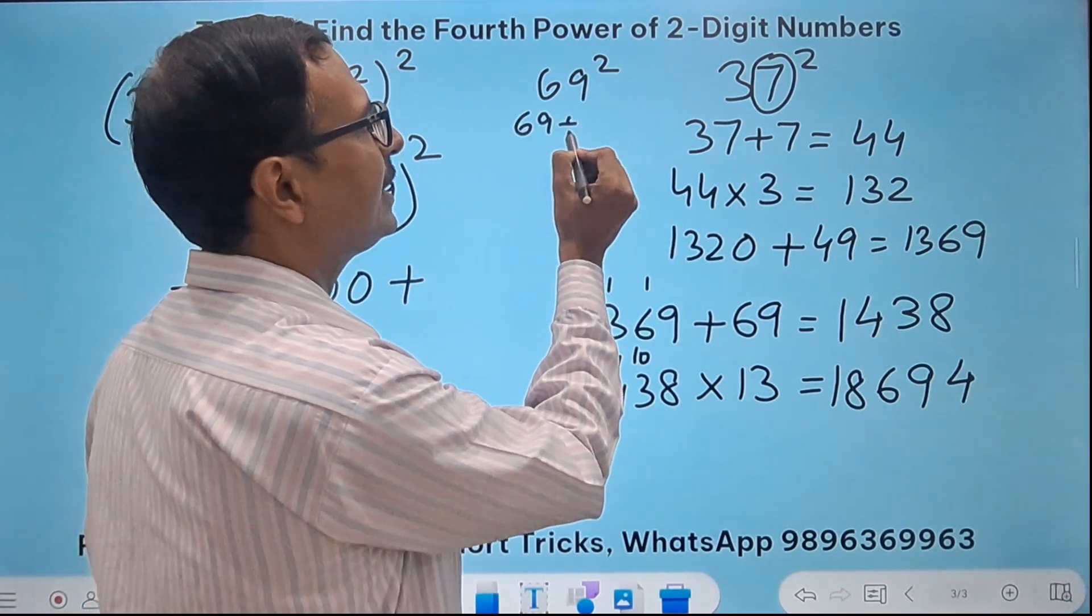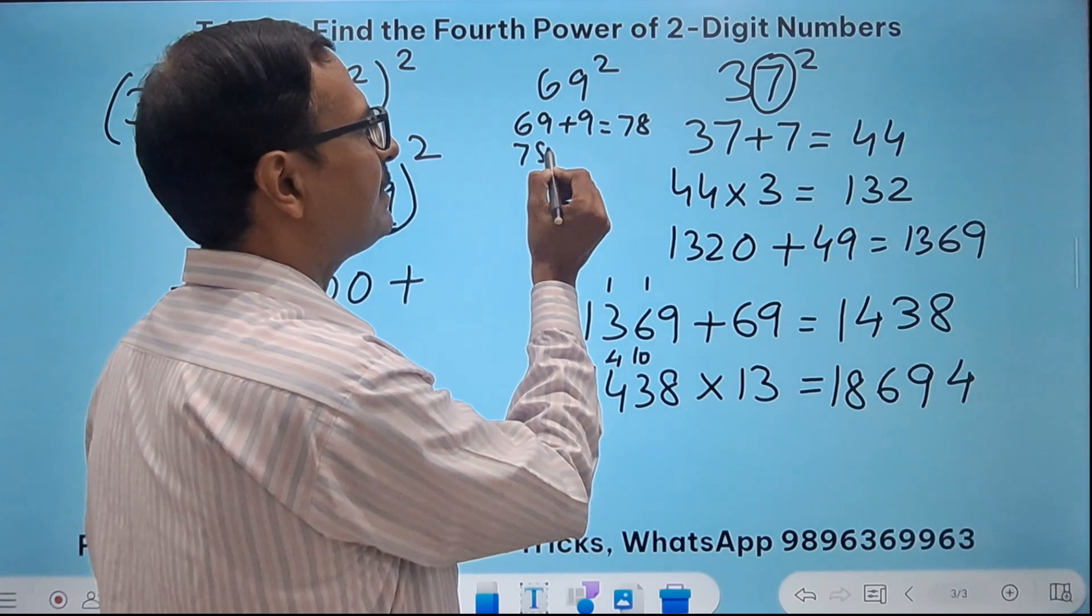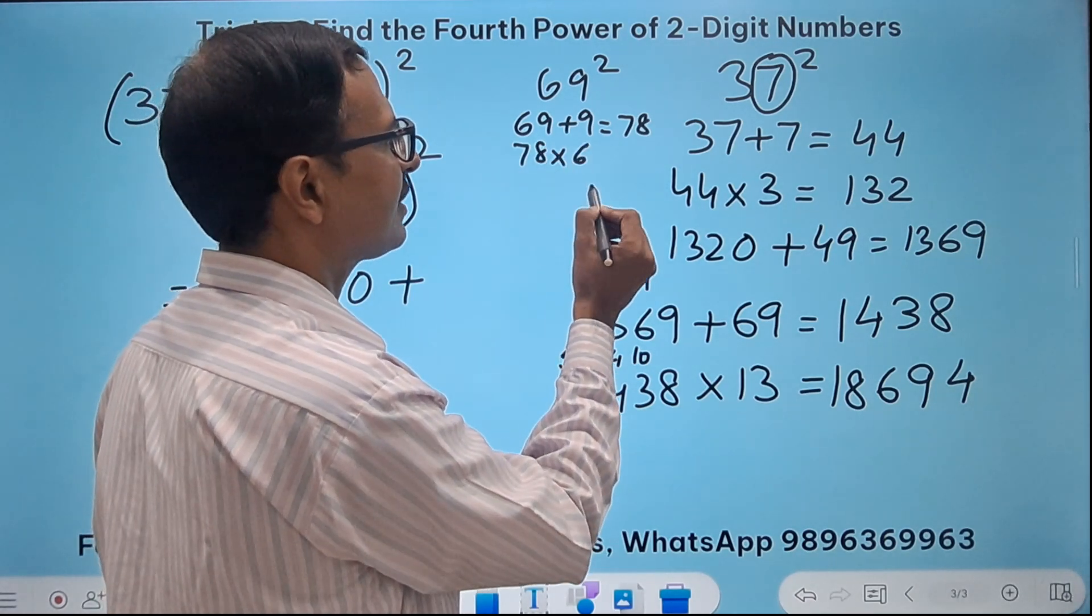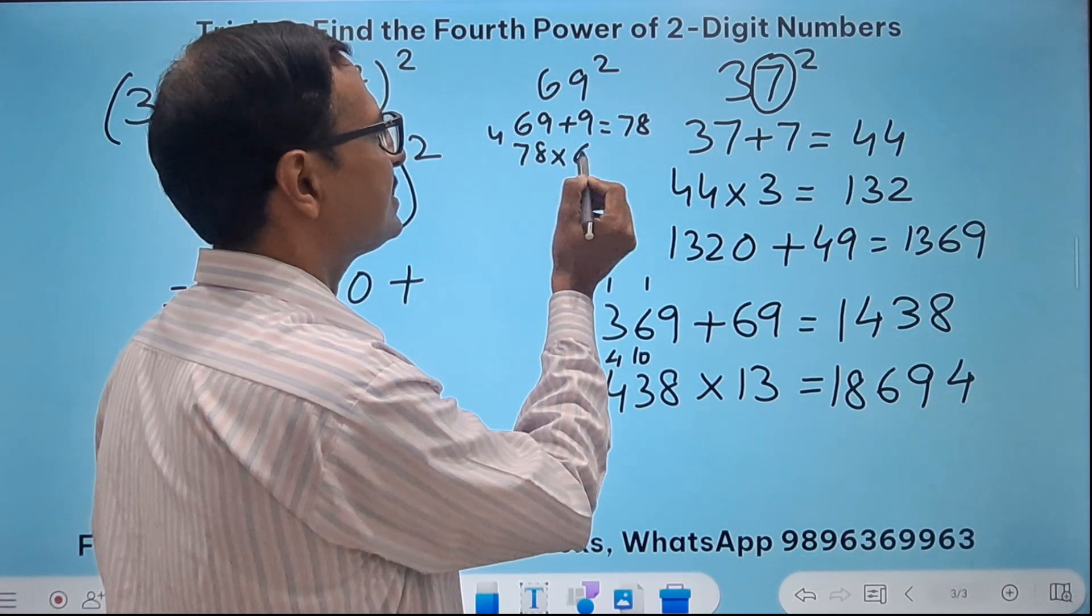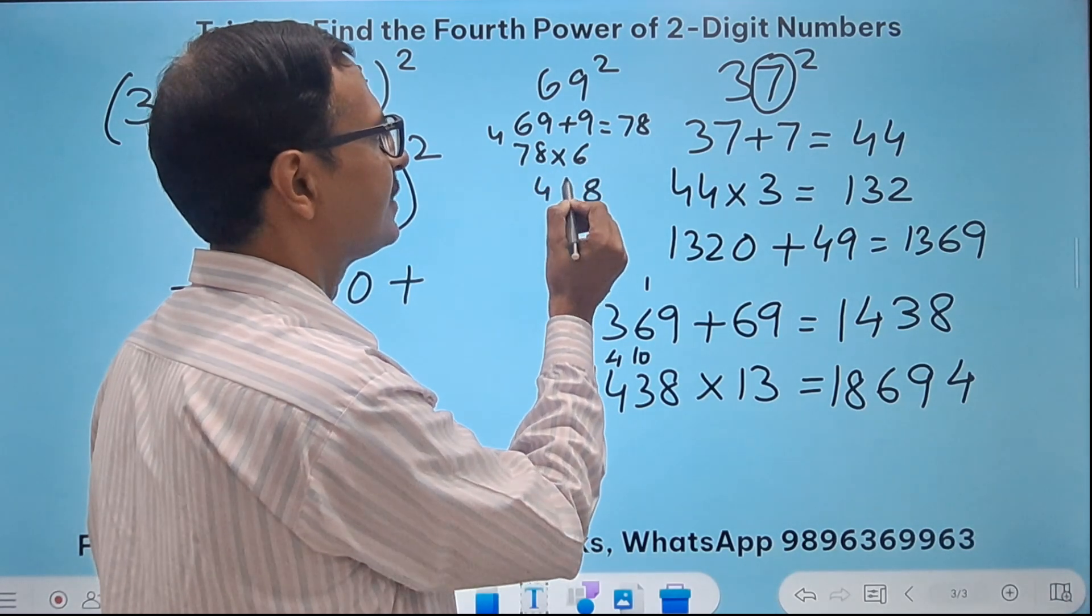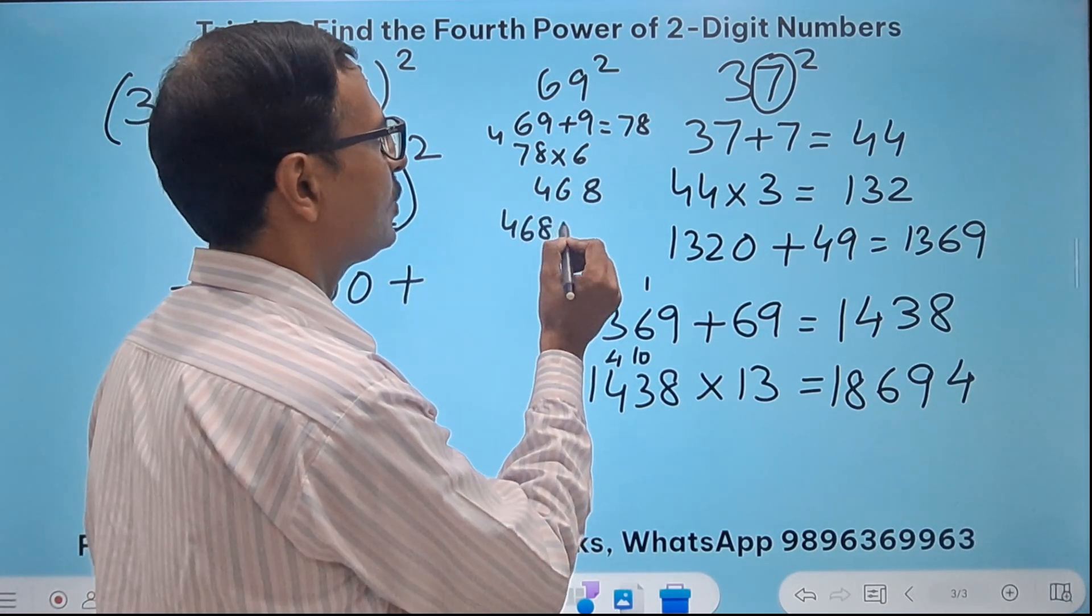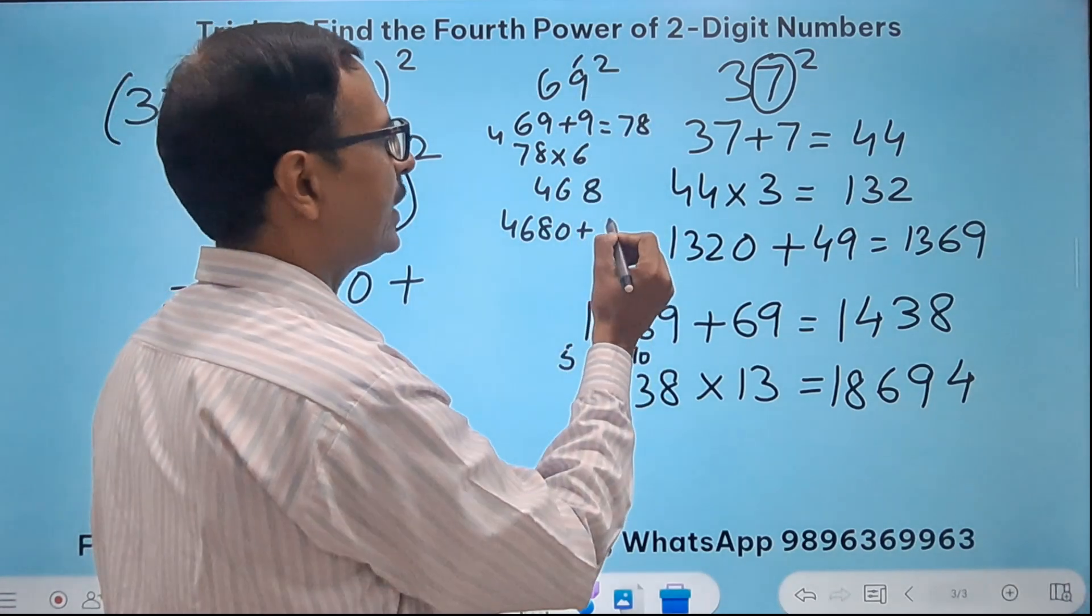So 69 plus 9 is 78. 78 times 6. That is 468. 7 times 6 is 42, so 46. And then 4680 plus 9 square 81.